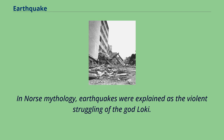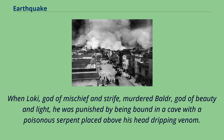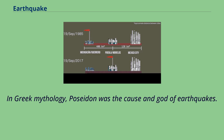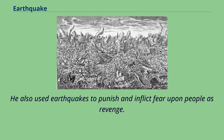In Norse mythology, earthquakes were explained as the violent struggling of the god Loki. When Loki, god of mischief and strife, murdered Baldur, god of beauty and light, he was punished by being bound in a cave with a poisonous serpent placed above his head dripping venom. Loki's wife Sigyn stood by him with a bowl to catch the poison, but whenever she had to empty the bowl the poison dripped on Loki's face, forcing him to jerk his head away and thrash against his bonds, which caused the earth to tremble. In Greek mythology, Poseidon was the cause and god of earthquakes — when in a bad mood, he struck the ground with a trident, causing earthquakes and other calamities, and used earthquakes to punish and inflict fear upon people as revenge.